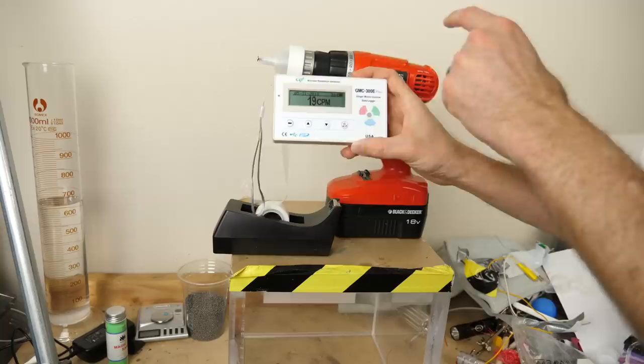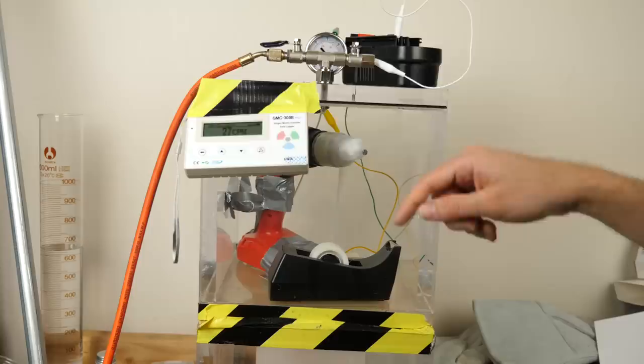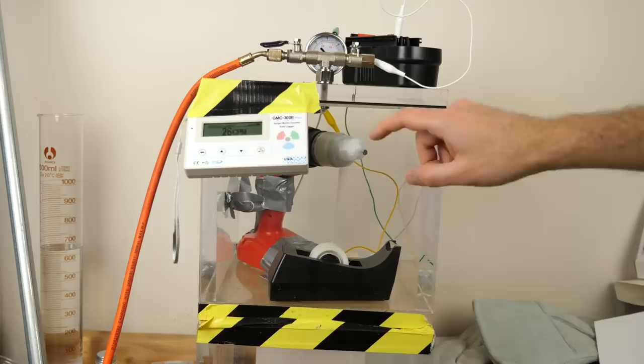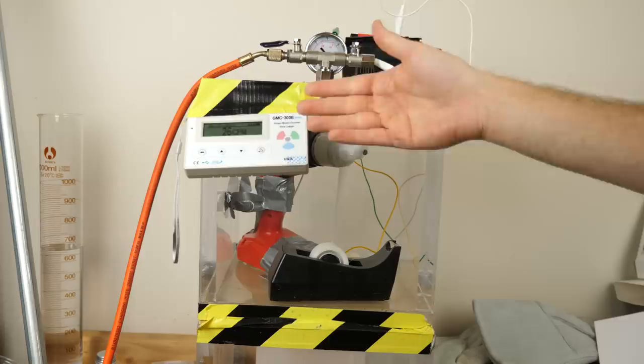So the goal is to see if I can get these clicks per minute to go up just by exposing it to x-rays from the tape here. Okay, we're at around 26, 27 counts per minute on our Geiger detector. So I'm going to go ahead and put this under vacuum, turn on my drill so that I'm pulling the tape as fast as I can and see if I can get the counts per minute to go up at all.